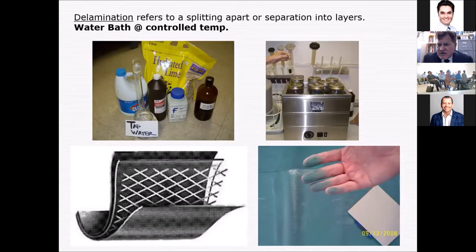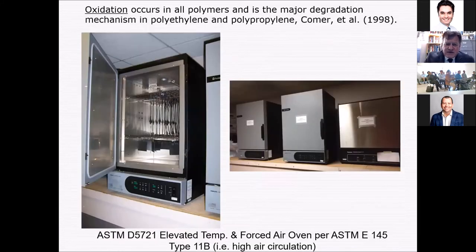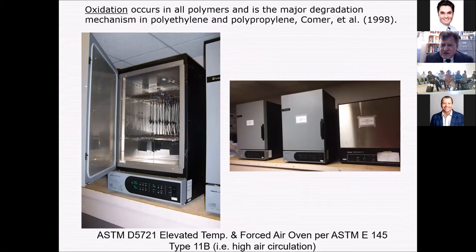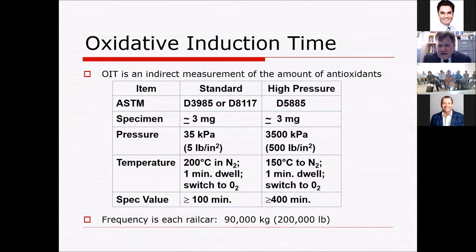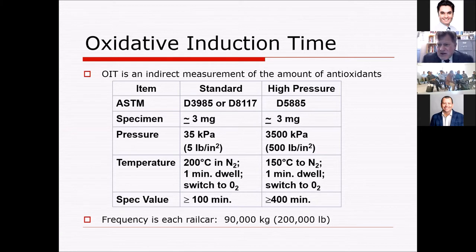Delamination is typically encountered when you have scrim-reinforced materials. These materials can take on water and this can delaminate the material quite readily. As far as oxidation, that's typically how the olefins — both polyethylene and polypropylene — will degrade. We have an oven aging procedure as well as a UV procedure in the GRI GM13 standards. The oven is a forced air oven which will move the air within the oven quite regularly.